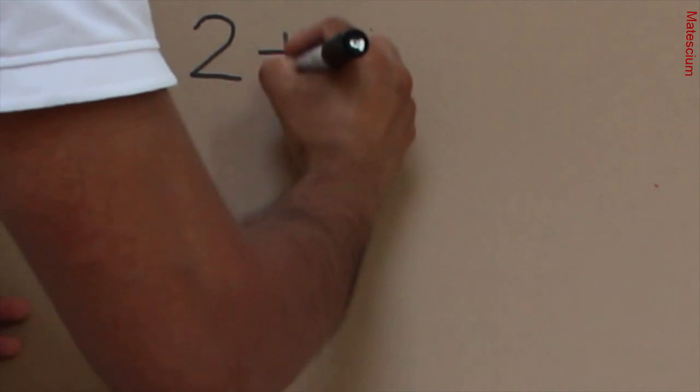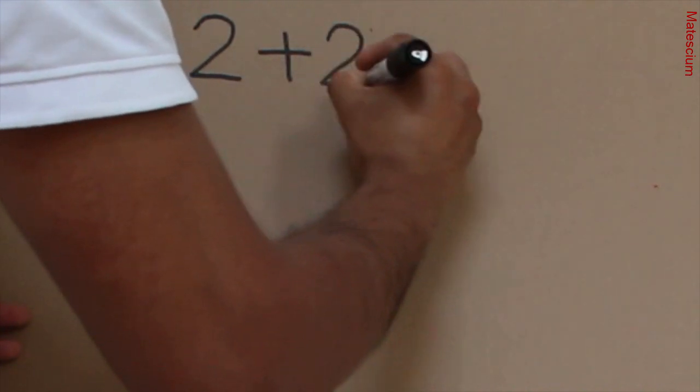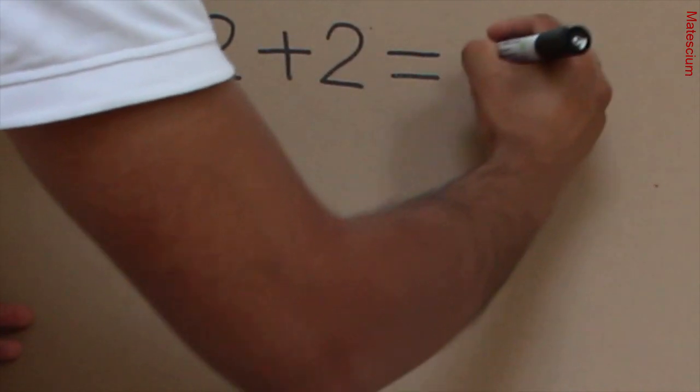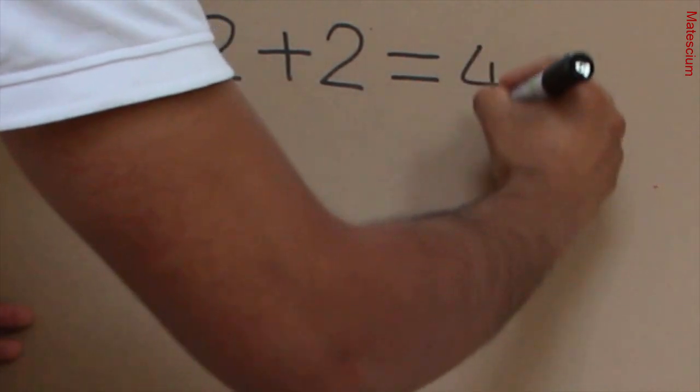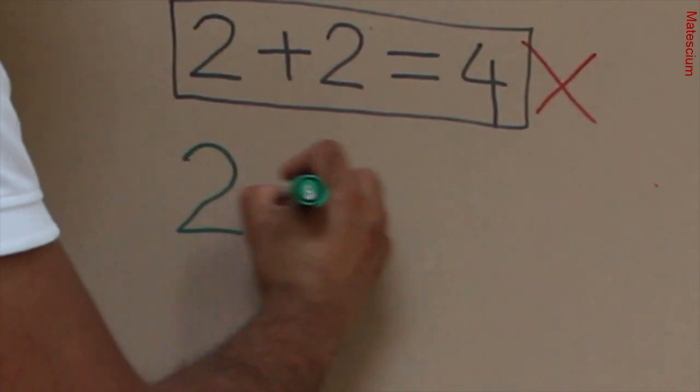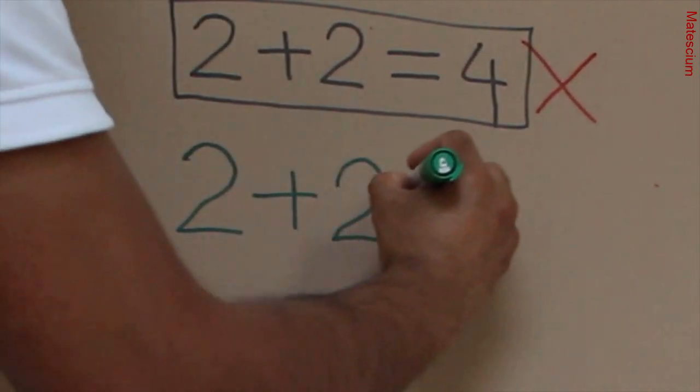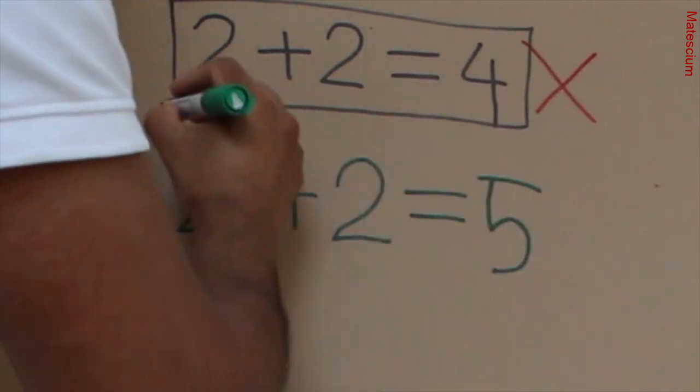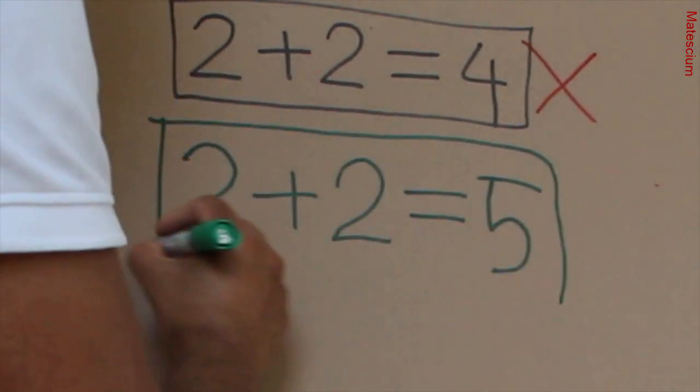Simple question here. If I ask you what's the result of 2 plus 2? I know you'd say 2 plus 2 is equal to 4. But I say 2 plus 2 is not equal to 4. I have a new trick that would prove 2 plus 2 is equal to 5. It seems like instant thinking, right? Just sit back and relax.